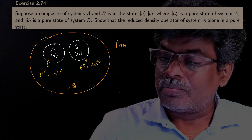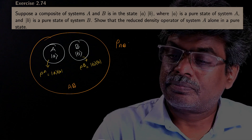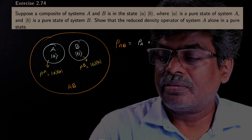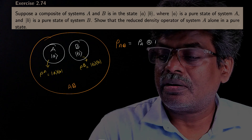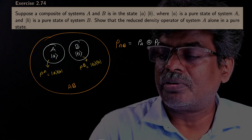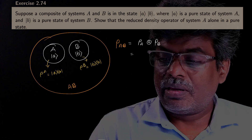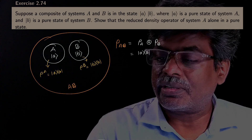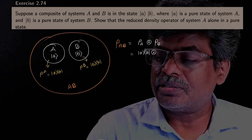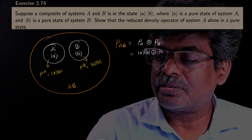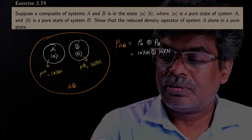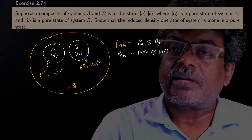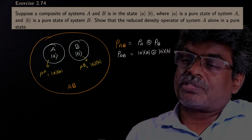The density operator of the composite system AB is nothing but ρ_A tensor ρ_B, which we can write as the outer product |A⟩⟨A| tensor the outer product |B⟩⟨B|. This is the density operator corresponding to the composite system.